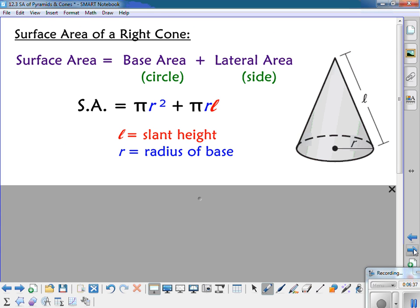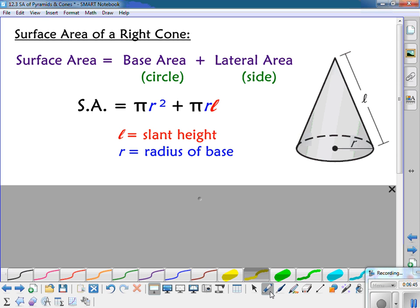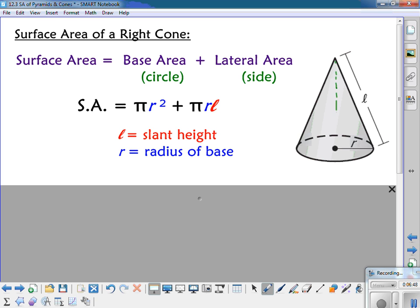Next we're going to look at cones. We're going to talk about the surface area of a right cone. So if it's a right cone, that means that this axis in the center has to be perpendicular. It's standing straight up, it's not leaning over. So the surface area is going to be the base area plus the lateral area. The base area is just a circle, so that's pi r squared. And then pi r L will give me the lateral area, where L is the slant height, and then r is the radius of the base.